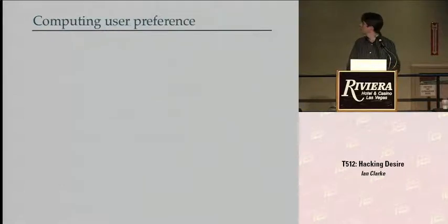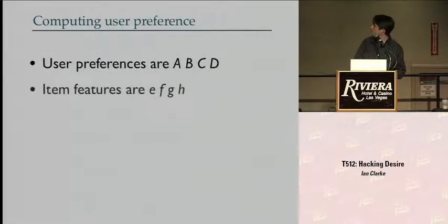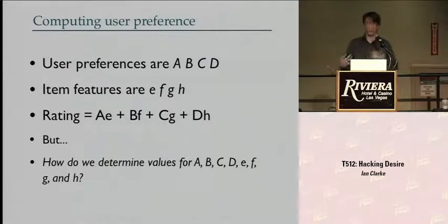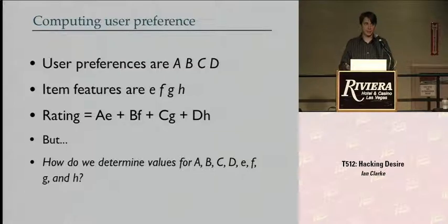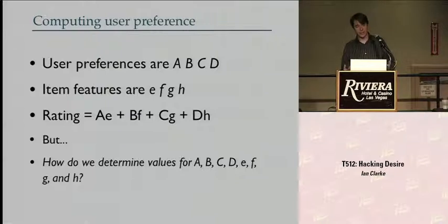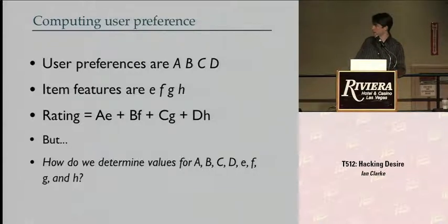But how do we figure out for a given user how much they like violence or sci-fi, and similarly what the properties of movies are? We can't laboriously go through each movie and assign these values — that would take very long. And we can't ask every user because they probably won't answer, and the answers won't be very good anyway. So how do we assign numbers to each of these values to get accurate ratings? That's basically where the gradient descent algorithm comes in.